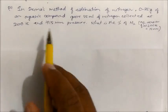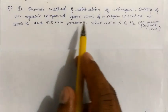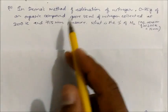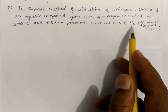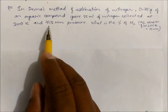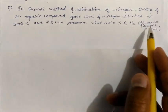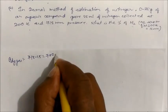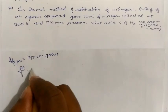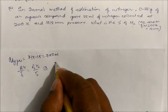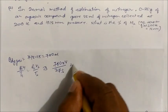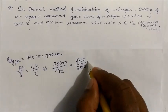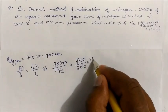Dumas Method Question 2: 0.35 gram of an organic compound gave 55 ml of nitrogen collected over water at 300 K and 750 mm pressure. Since it is collected over water (moist gas), we subtract the aqueous tension: pressure of dry gas = 750 − 15 = 700 mm (aqueous tension at 300 K is given as 15 mm). Now apply P₁V₁/T₁ = P₂V₂/T₂ with P₁=760, T₁=273, P₂=700, T₂=300 K, V₂=55 ml to find V₁ (volume at STP).